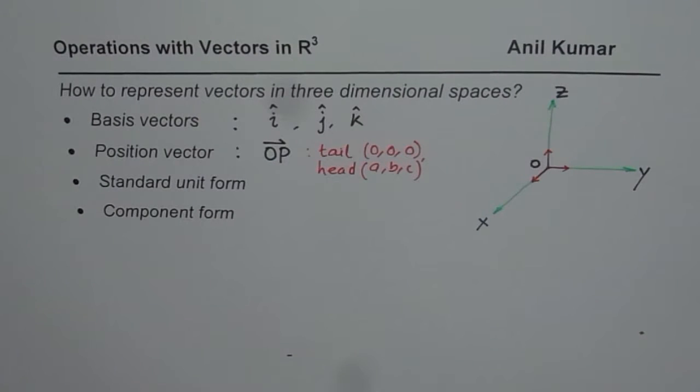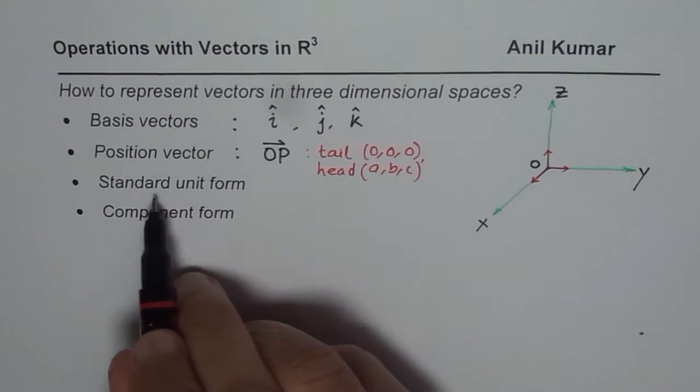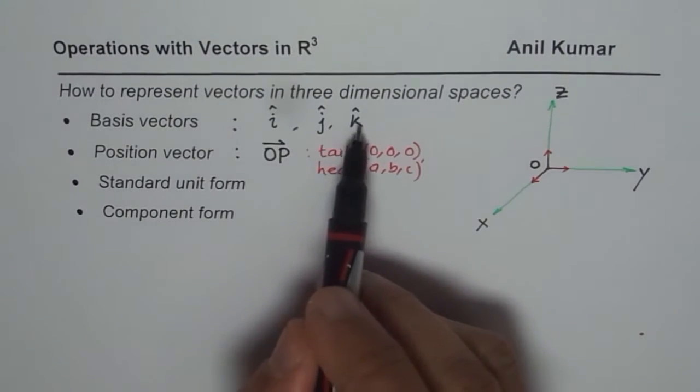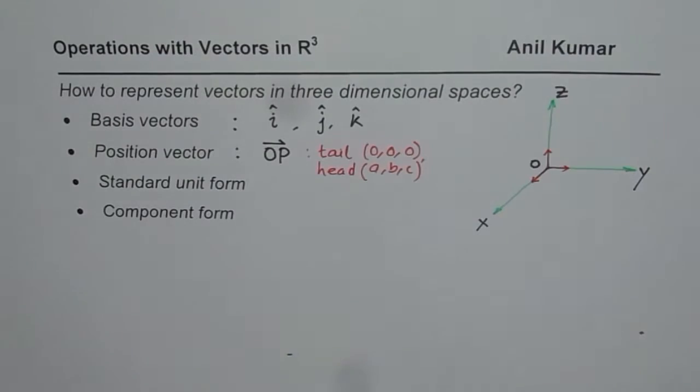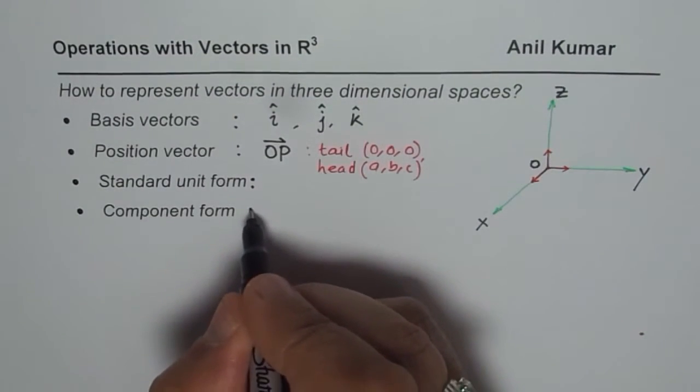This vector, the position vector, could be represented in different forms. We could write this in standard unit form using i, j, k or in component form.